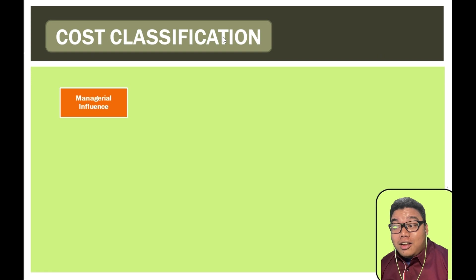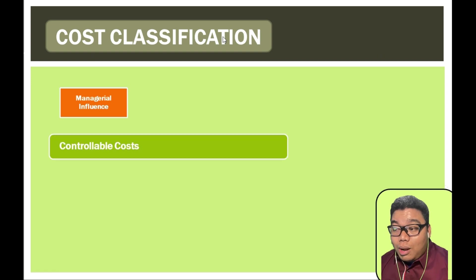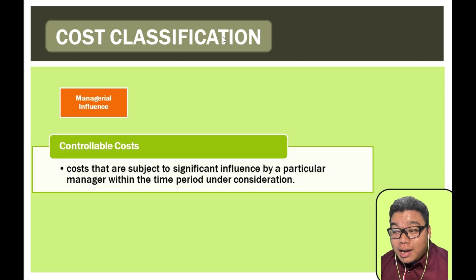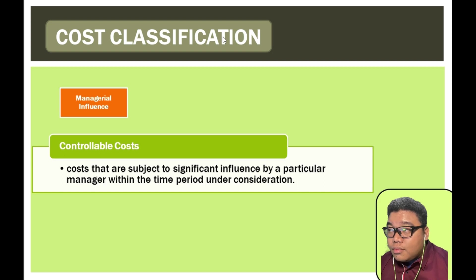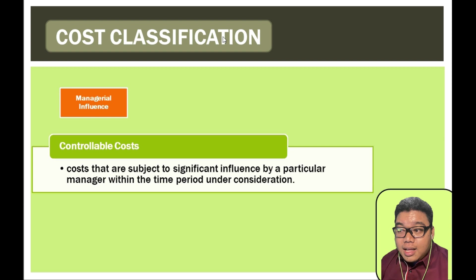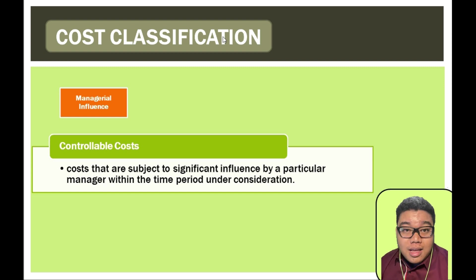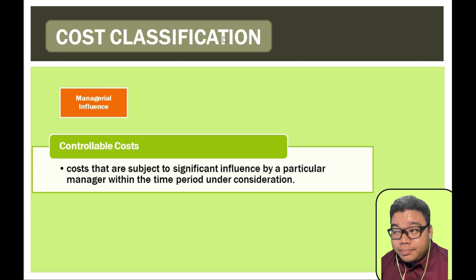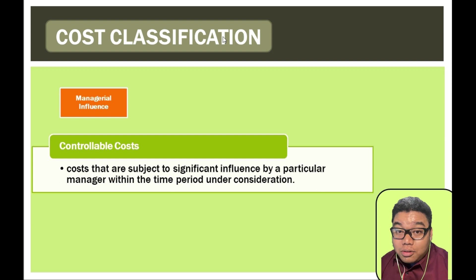Cost classification according to managerial influence: a controllable cost is one where the management or person in charge can control the increase or decrease of the cost incurred. For example, the number of hours employees spend in a department can be adjusted by the manager, and the amount of raw materials put into production can also be controlled by management.